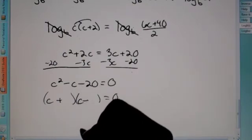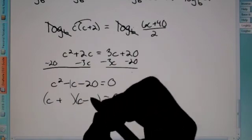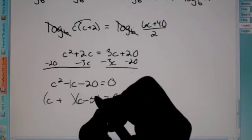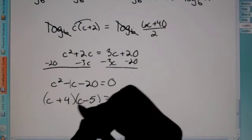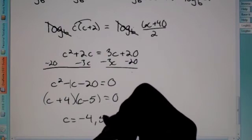We know it's going to be opposite symbols. Factors of 20 that have a difference of 1, 5, and 4. So, 5 goes with a negative. 4 goes with a positive to make a negative 1. So, c equals, switch a symbol, negative 4, positive 5.